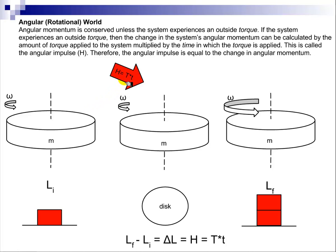so in the angular world, when we add an outside torque, that changes the angular momentum. So in this case, angular momentum is not conserved because there is an outside torque being applied to our system.